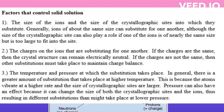The first factor is the size of the ions and the size of the crystallographic sites into which they substitute. Generally, ions of about the same size can substitute for one another, although the size of the crystallographic site can also play a role if one of the ions is too large to fit into the site.